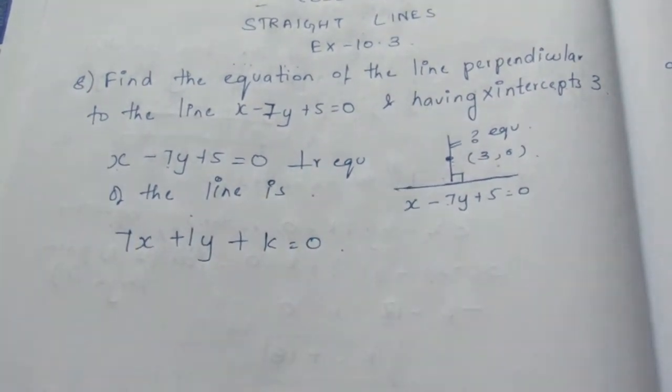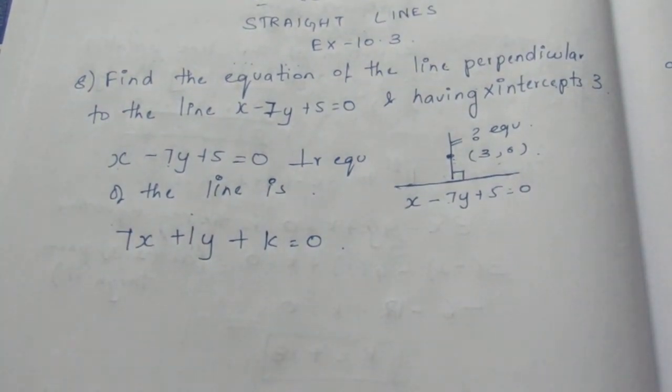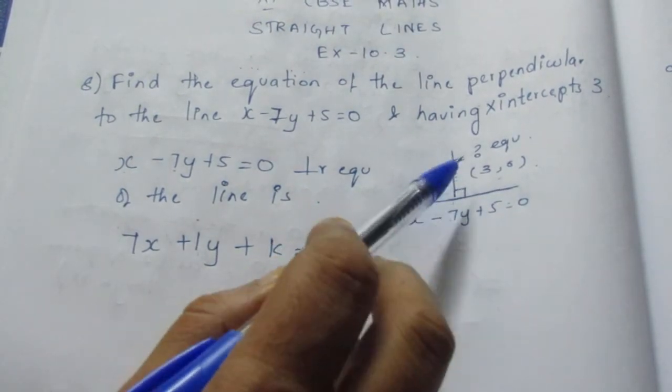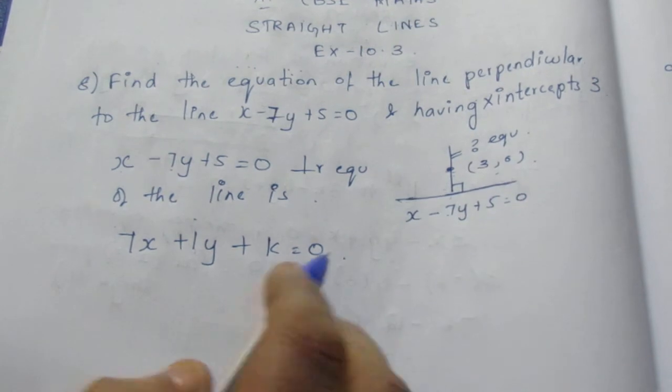This is the required equation in which we need to find the value of k and substitute it. To find the value of k, we know that this is the equation of this line, and there is a point (3, 0) that passes on it.